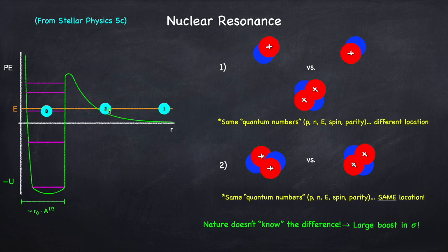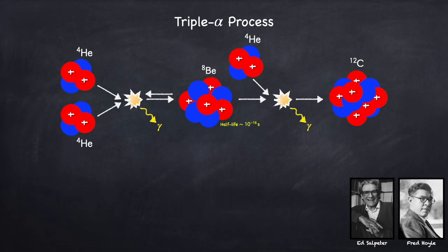But now, what if the nuclei are close to one another, but not bound yet? So now, the unbound state looks like this. They're not quite stuck together, but they're almost touching. In this case, the quantum numbers are still all the same, but now the location is the same, or very close to the same. So everything describing these two different scenarios is the same. So we can't tell the difference between the bound and the unbound state. And when I say we can't tell them apart, I don't mean human beings. I mean, as far as nature is concerned, there is no difference. Nature doesn't know the difference between these two situations. And when that happens, it turns out that you get a very large boost in the interaction cross-section. If you don't know what the interaction cross-section is, you can go back to stellar physics 5C. But basically, this is just telling you the probability that the two nuclei are going to fuse.